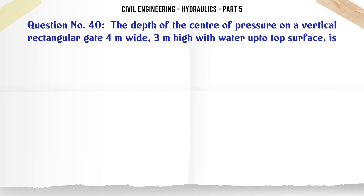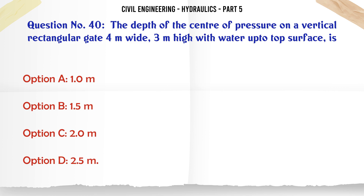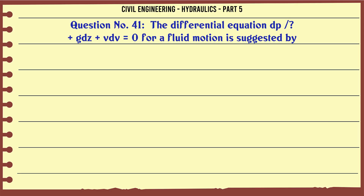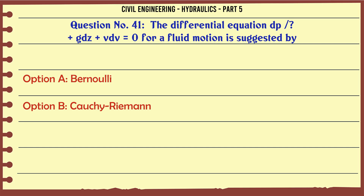The depth of the center of pressure on a vertical rectangular gate 4 m wide, 3 m high with water up to the top surface is: A. 1.0 m, B. 1.5 m, C. 2.0 m, D. 2.5 m. The correct answer is 2.0 m.